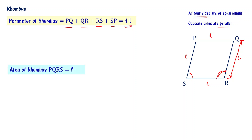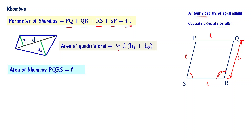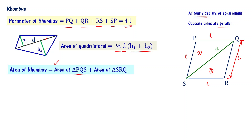What about the area of this rhombus? When you have a quadrilateral, we use the triangulation method to get the area. For this particular quadrilateral, we got area as half times D times (H1 plus H2). Similarly, to apply the same idea of triangulation, we split this rhombus into two triangles by connecting S and Q. This gives us diagonal D1 — diagonal one of the rhombus — dividing the rhombus into triangle one and triangle two. Area of rhombus PQRS equals area of triangle PQS plus area of triangle SRQ.